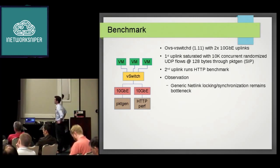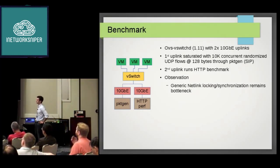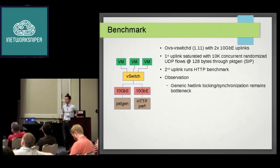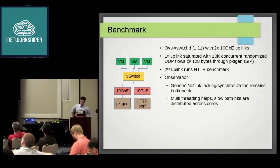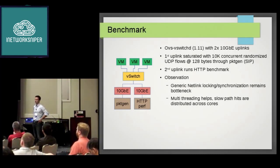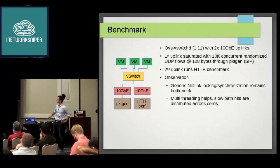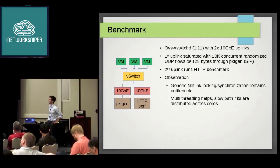The observation: the generic netlink upcall is still the bottleneck, specifically the locking thereof. Multi-threading helped a lot, but it's still by far the slowest piece in the whole machine. The reason multi-threading helped is that it no longer puts all the load on a single core. Previously, on a six-core machine, you would typically see one core at 100% CPU just running OVS and not able to keep up. Multi-threading spreads the cost of the slow path across all cores.